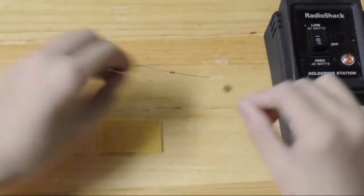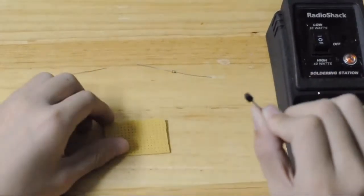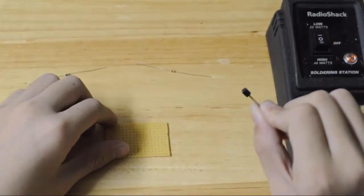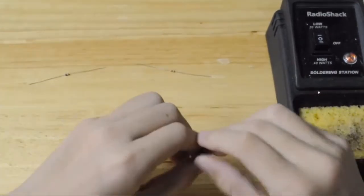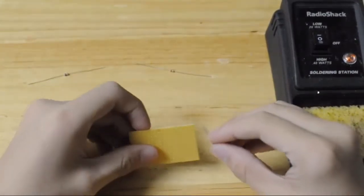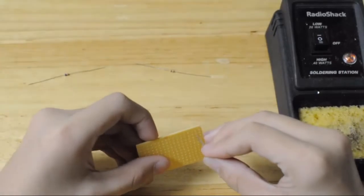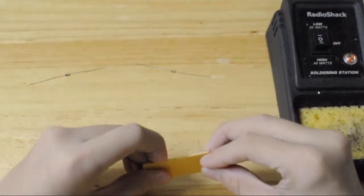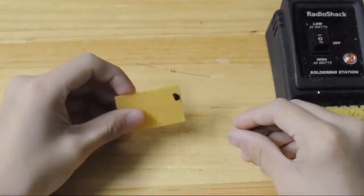The first step is to take your transistor and you need to take the three legs and you need to insert it into three of the holes of the perfboard. Now make sure the flat side is facing the left when you're doing this.